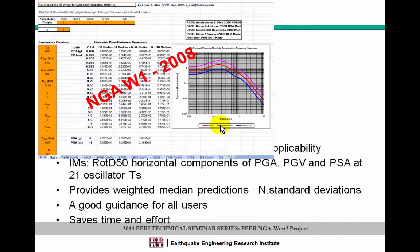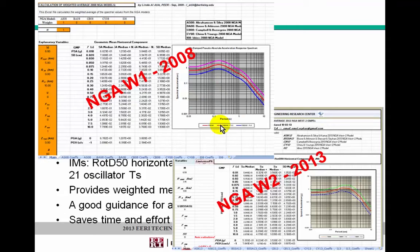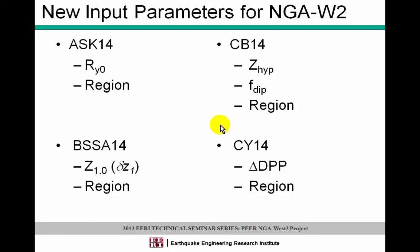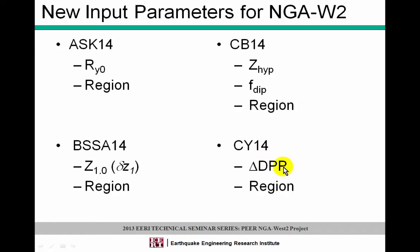That was a screenshot from NGA-West1 2008 spreadsheet, and now this is the NGA-West2 2013. Since 2008, GMPE developers added new terms to their models. For example, ASK-14 has the RY0 term related to attenuation of hanging wall effects; CB-14 has the hypocentral depth term and the rupture depth term; BSSA-14 added the basin depth term related to Z1 — the differential from the average basin depth predictor variable; and CY-14 has the delta DPP, the direct point parameter, related to directivity effects. All GMPEs now also include regional variations in attenuation, anelastic attenuation terms, or basin depth.